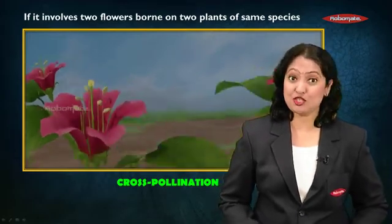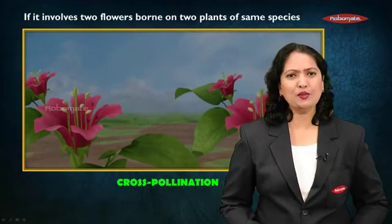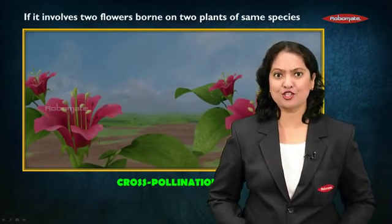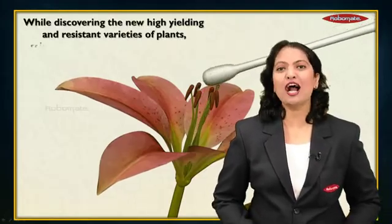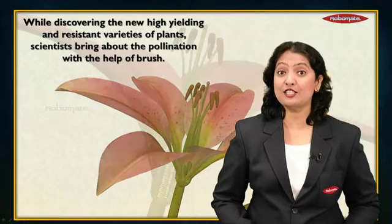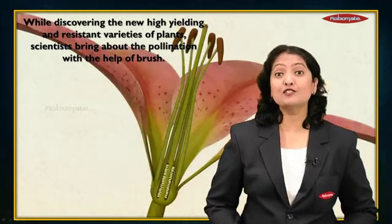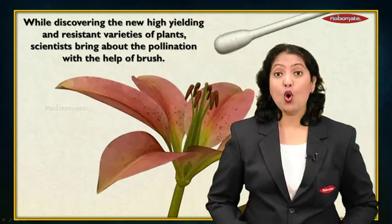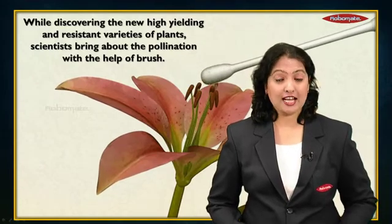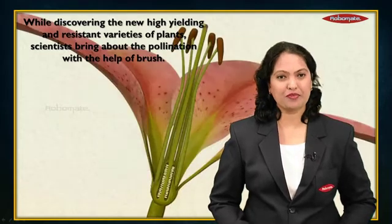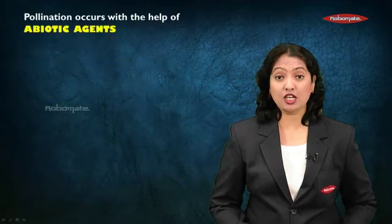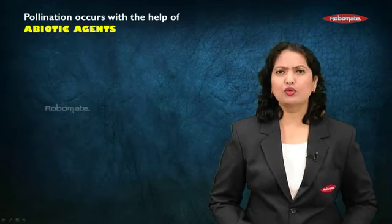With the help of biotechnology today, new plants are being developed. While discovering new high-yielding and resistant varieties of plants, scientists bring about pollination with the help of a brush, and this is called as artificial pollination.